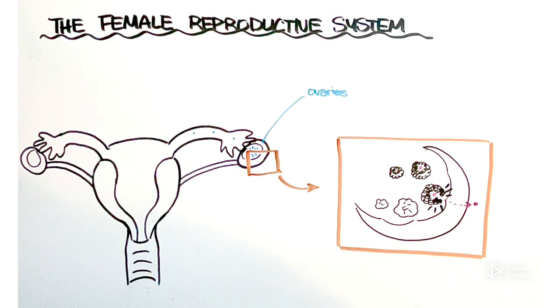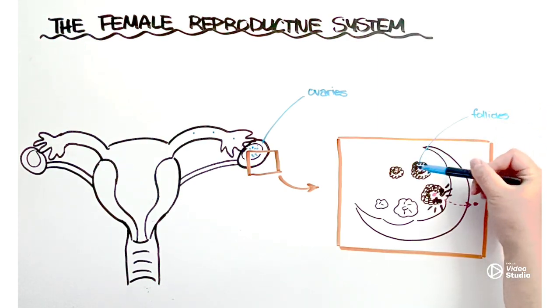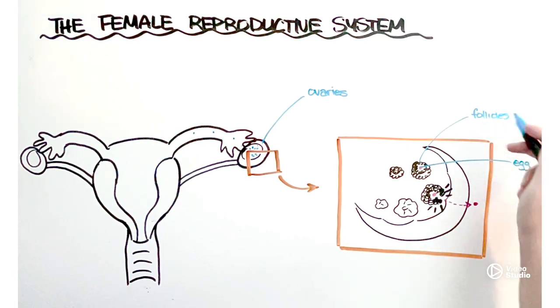Once a month beginning at puberty one of the eggs inside of these ovaries is going to mature and that takes place within a cluster of cells known as follicles. Follicles are all these loopy kind of black parts of the tissue that surround the pink egg. The egg is this pink little dot inside and follicles are essentially supportive cells. They help to secrete hormones that allow the egg inside of them to mature.